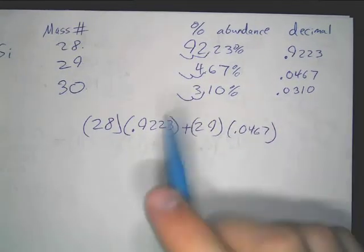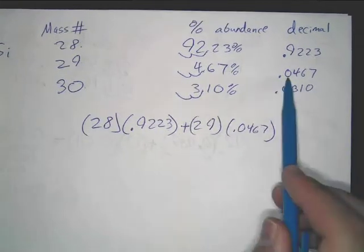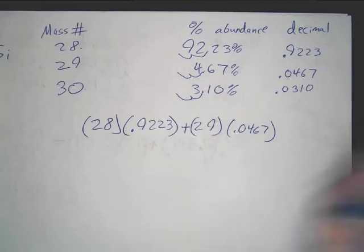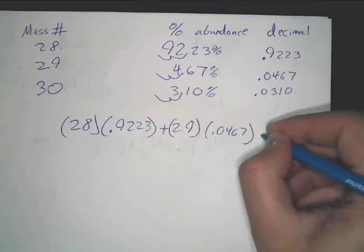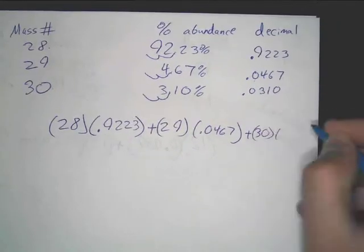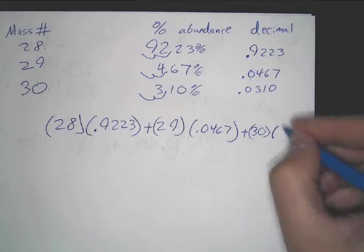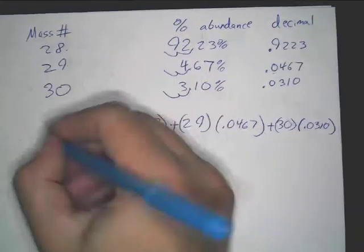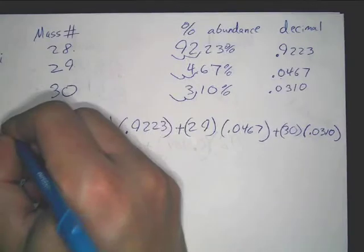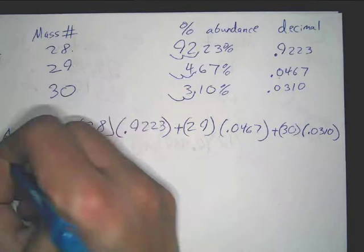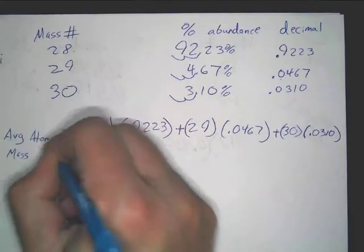As another possible cause of error, don't leave off that zero. When you move the decimal over, do not forget to add that zero. You're going to add then 30 times .0310. Now this will equal, as I've been saying, the average atomic mass of silicon.